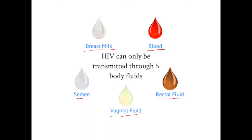For transmission to occur, there needs to be an entry point into the body, usually into the bloodstream. Some routes are more likely than others. For example, it's much more common for a man to transmit HIV to a woman than vice versa, because micro-fissures can form in the walls of the vagina during intercourse, allowing HIV entry. The rectum is even more delicate than the vagina — it lacks natural lubricants and can tear more easily, making it a more common entryway for HIV.